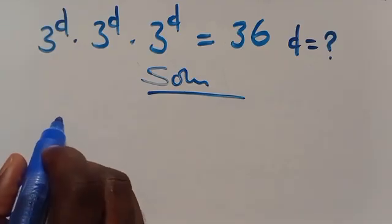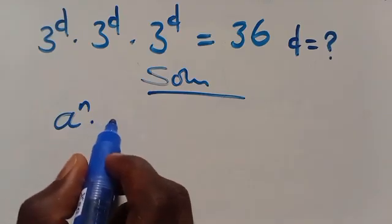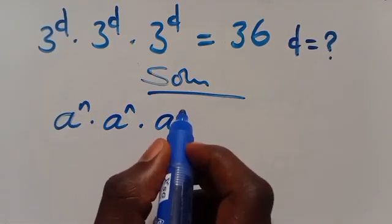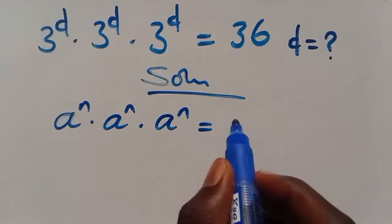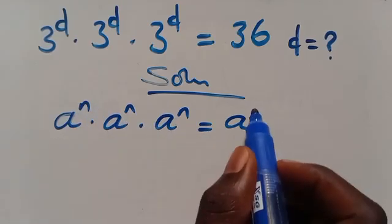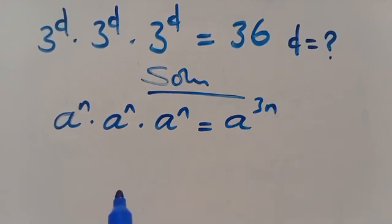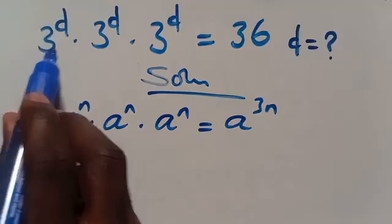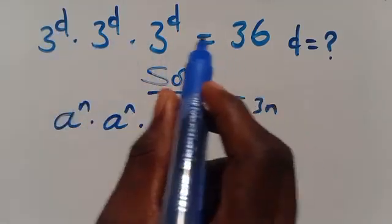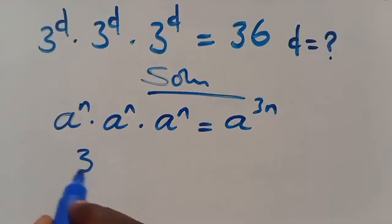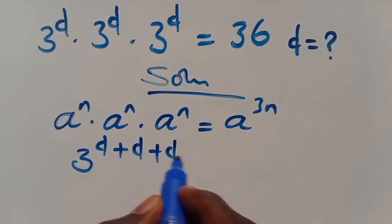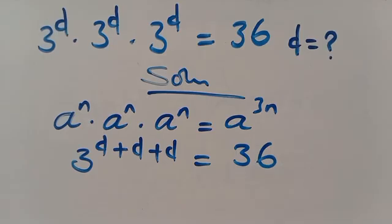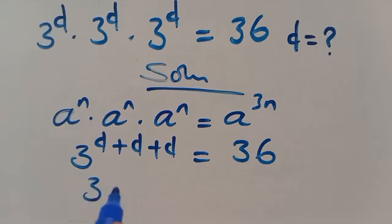Recall that when we have a to the power of n multiplied by a to the power of n multiplied by a to the power of n — since they have the same base — we take one base and add the powers together to get a to the power of 3n. So here we have 3 to the power of D multiplied by 3 to the power of D multiplied by 3 to the power of D, which equals 3 to the power of D plus D plus D, giving us 3 to the power of 3D equals 36.